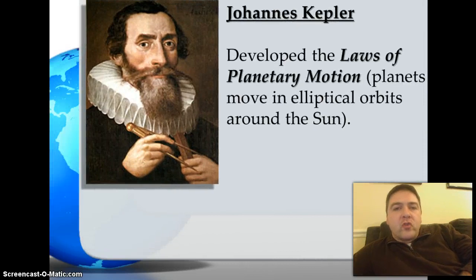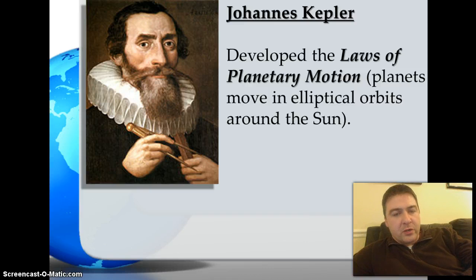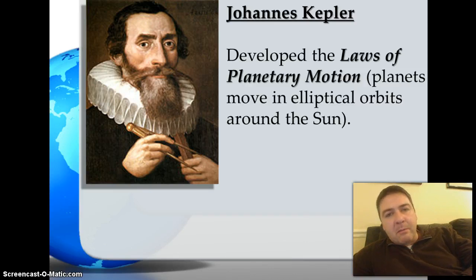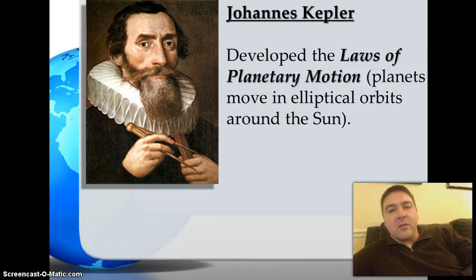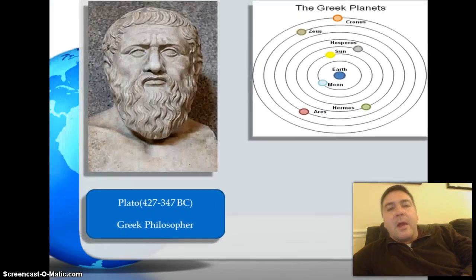Another astronomer we need to know is a German astronomer named Johann Kepler. Kepler developed the laws of planetary motion, which stated that planets move in paths called ellipses — elliptical orbits around the sun.